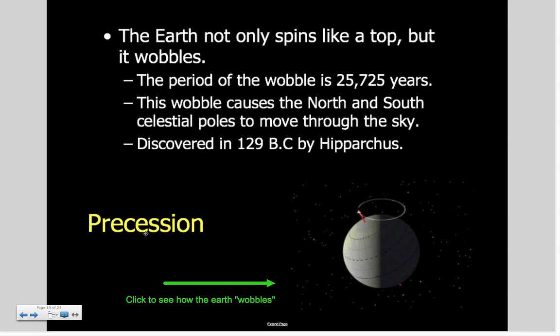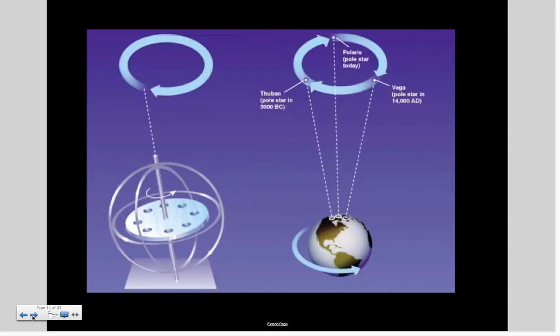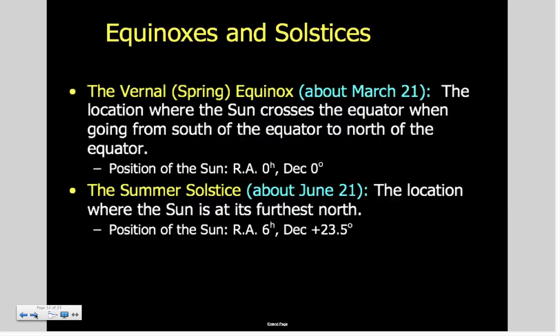That's called precession—it's not just the wobble, but it actually has a name called precession. This is another picture of how that would look. If you were here on the North Pole looking up, you would see that the stars look like they kind of make a circle. We have one of these in our classroom if you want to come see me.